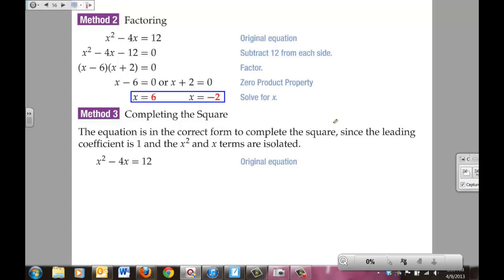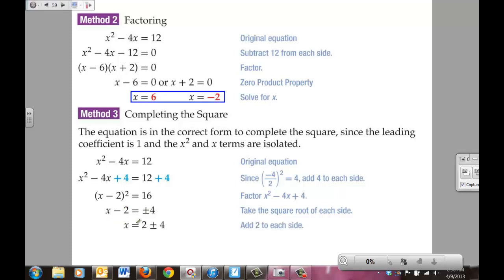From there, you're going to take and use the -4/2 all squared. That -4 came from this value right here, your b value. And that ended up equaling 4. So we added 4 here and we added 4 there. And in doing that, it gave us (x - 2)² = 16. Take the square root of both sides. x - 2 = ±4. Therefore, you had x = 2 ± 4. x = 2 + 4 or x = 2 - 4. And there you have the same solutions again of 6 and -2.